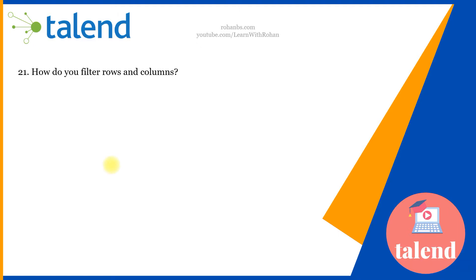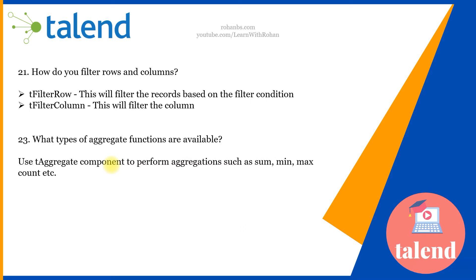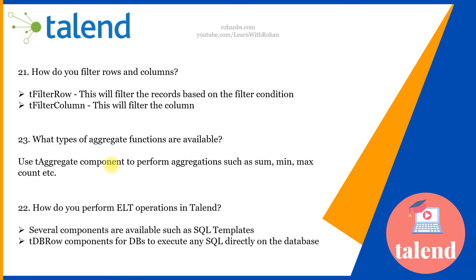The next question is how do you filter rows and columns. Filter row is used to filter records based on a condition you define in the filter section. Filter column will actually filter the column altogether and propagate only the required columns to the next component in the job flow.